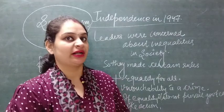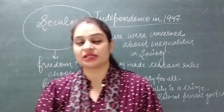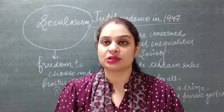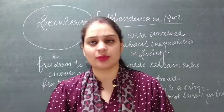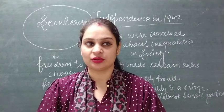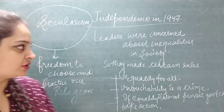After independence in 1947, the leaders were concerned about the different inequalities prevailing in society. The government was concerned about the inequalities, so leaders decided to make certain rules so that equality may prevail in the society. They made some rules, and the first was equality for all.